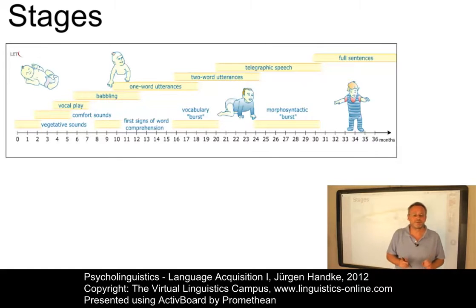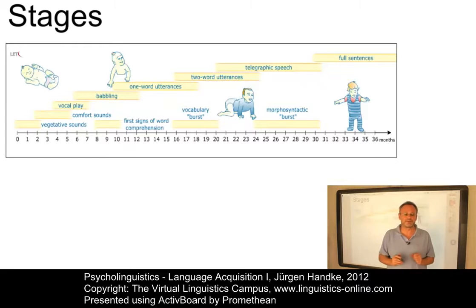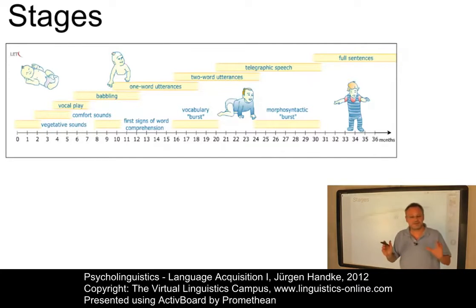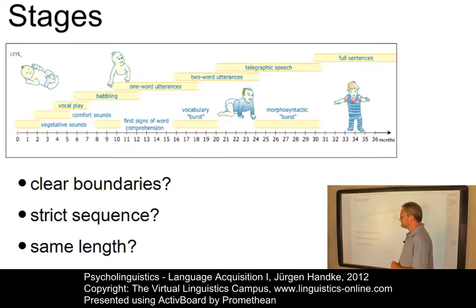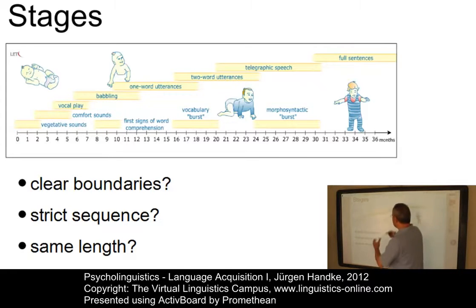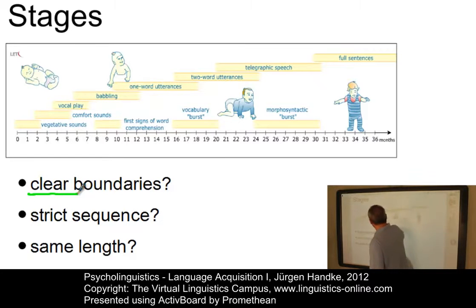It is controversial whether or not discrete phases are involved in the course of language development. The diagram shown here displays the stages that are commonly identified in the relevant literature. It is relatively clear that these stages have no clear boundaries, as indicated by the fading edges.